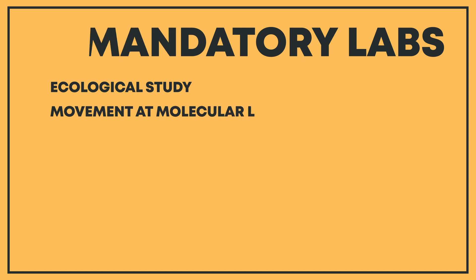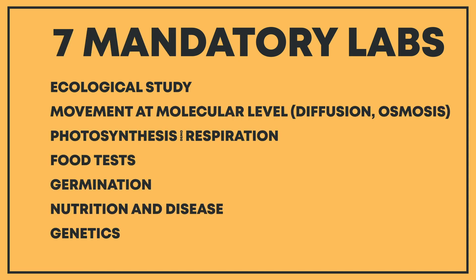The seven topics are: ecological study — so that would be food chains, food webs, observing interactions in the environment. You have molecular movement, so that would be osmosis or diffusion, and that comes under the syllabus topic of cells. You also have photosynthesis and respiration — you need to cover labs that speak to both photosynthesis and respiration.